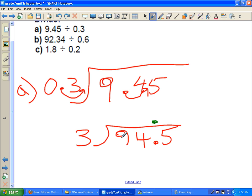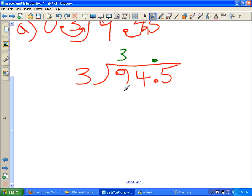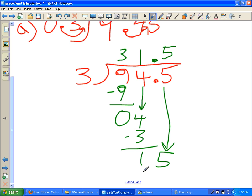3 divided into 9, it goes 3 times. And then I'll put 3 times 3 is 9, and I've got none left over there. Bring down your 4. 3 goes into 4 once. So 3 times 1 is 3, and we have 1 left over. Bring down your 5 to help. 3 goes into 15, 5 times. 3 times 5 is 15, and we've got no remainder. And our answer now is 31.5.